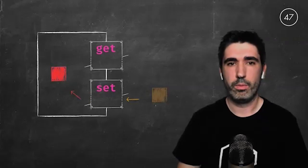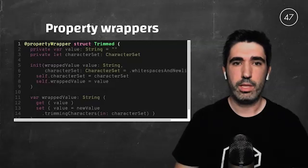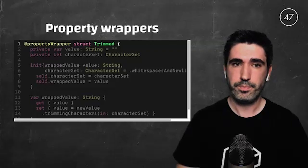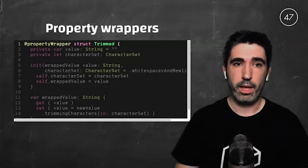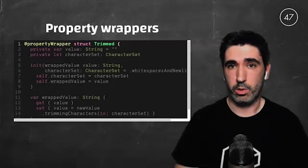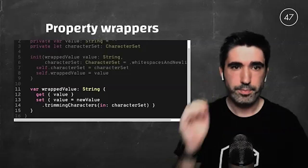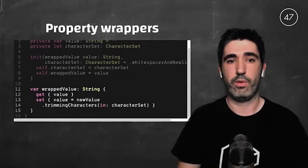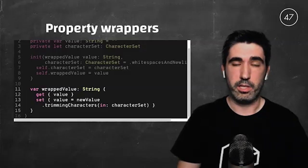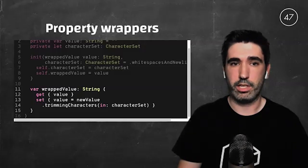Let's imagine we want to build a property wrapper to trim the leading and trailing characters of a string. We create a structure called `Trimmed` and annotate it with `@propertyWrapper` to indicate to the compiler that this is going to be used as a property wrapper. Every property wrapper must have a `wrappedValue`. In our case, this has type String, and this is where we add actions whenever we are getting or setting it. When setting a new value, we trim characters from a chosen character set.